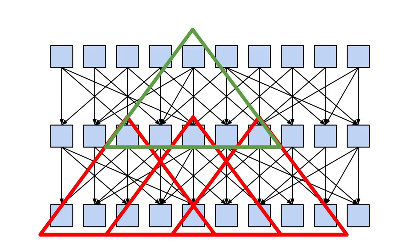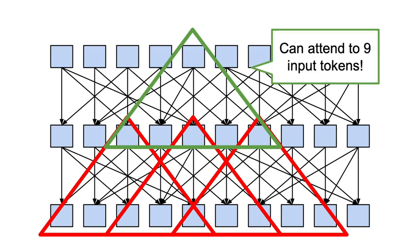However, if we look at the context window of the second layer on the input tokens, we can see that it's much wider in this case, compared to the previous case without dilation.